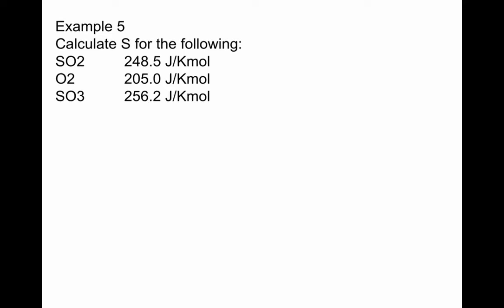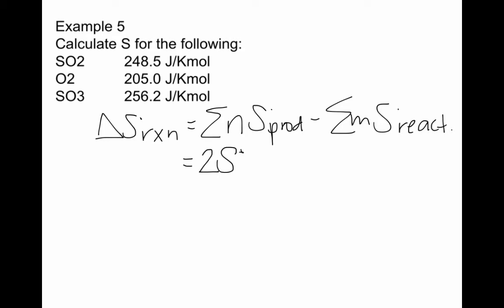So it is important to remember how to calculate any standard value. So we have delta S naught of the reaction equals the sum of the coefficients times S naught of the products minus the sum times the coefficient times S naught of the reactants. So what this means is we are going to have the sum of the products. So the products is just sulfur trioxide, always multiplied by the coefficient. So we're going to have 2 times the entropy of SO3 minus the sum of the reactants. So we're going to have 2 times S naught of SO2 plus S of O2.